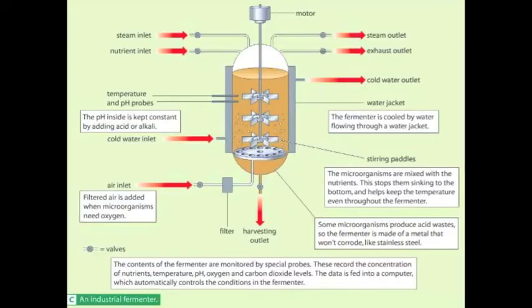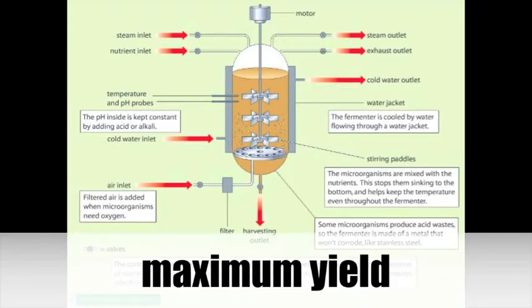There are conditions in which each species of microorganism grows best. These are known as the optimum conditions for growth. They include a particular mixture of nutrients, an optimum temperature and an optimum pH. The conditions inside the fermenter can be carefully controlled so that the microorganisms will produce as much of the product as possible. This is called the maximum yield.